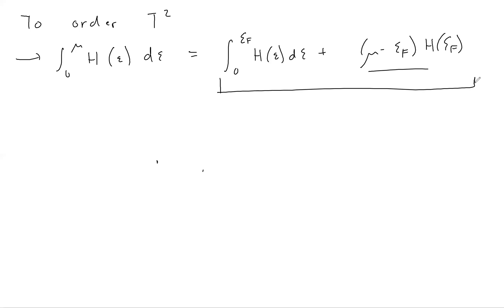We're going to apply this simplification to the integrals we wrote down before. The first term is exactly something like this in the expressions for total energy and density. We're going to make this simplification, which is correct to order T squared. For the other terms that are already of order T squared, we're simply going to replace mu by the Fermi energy.